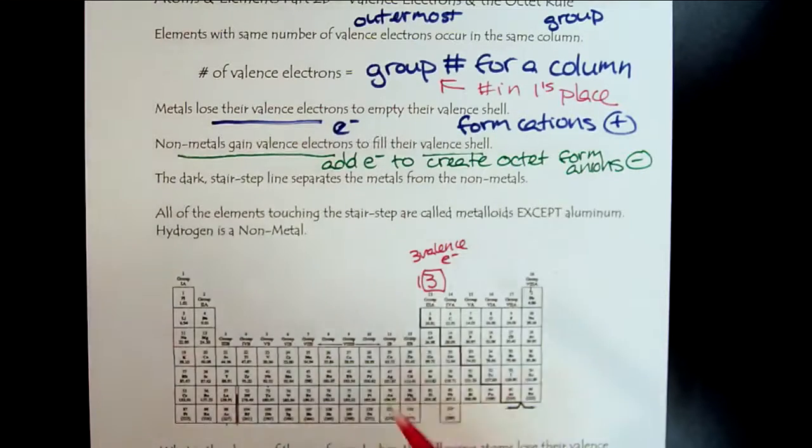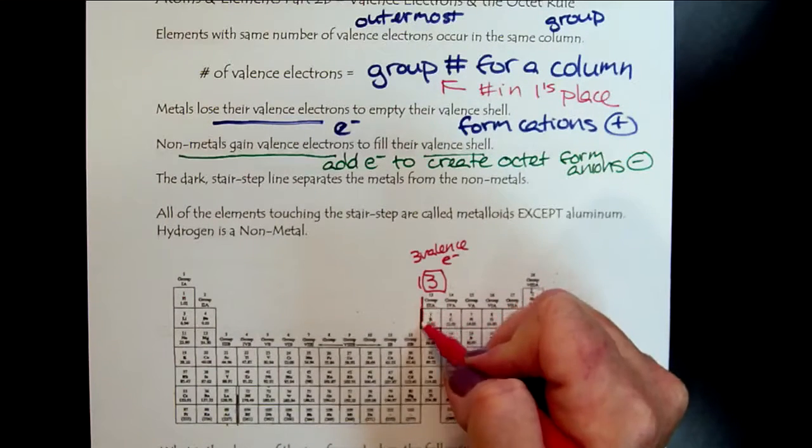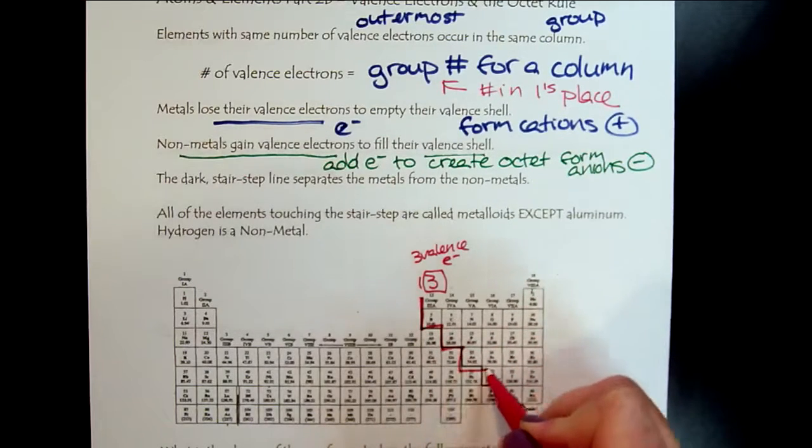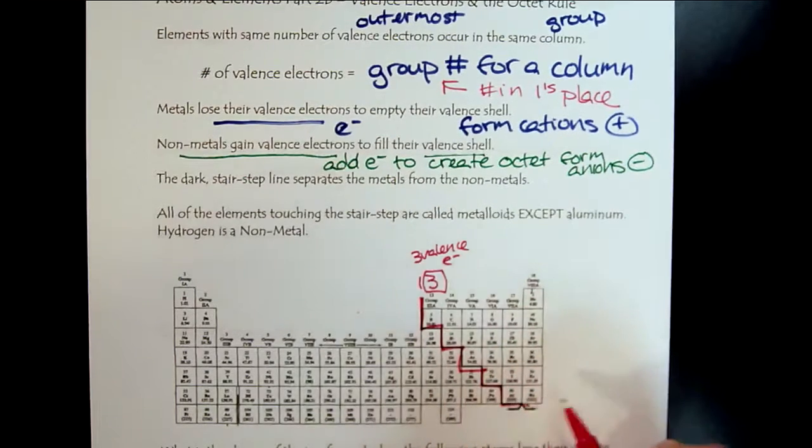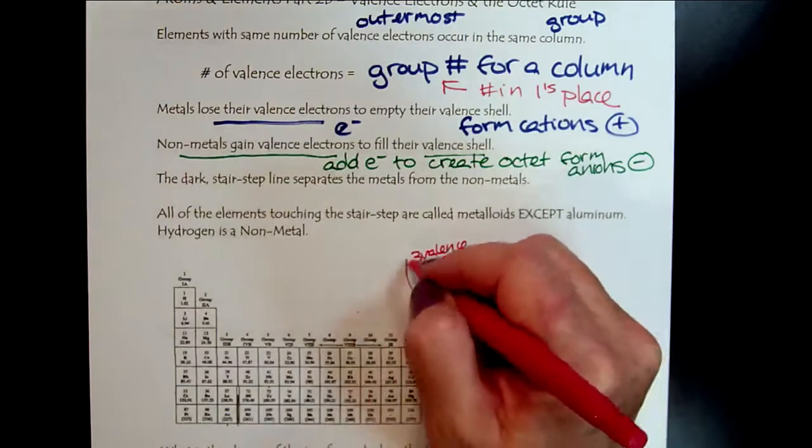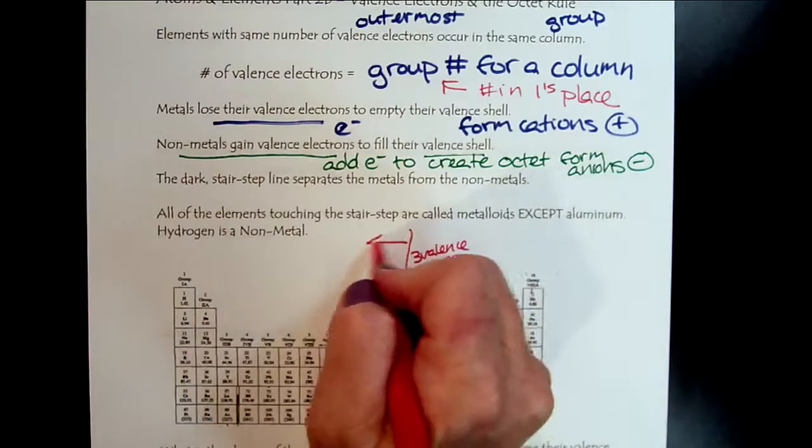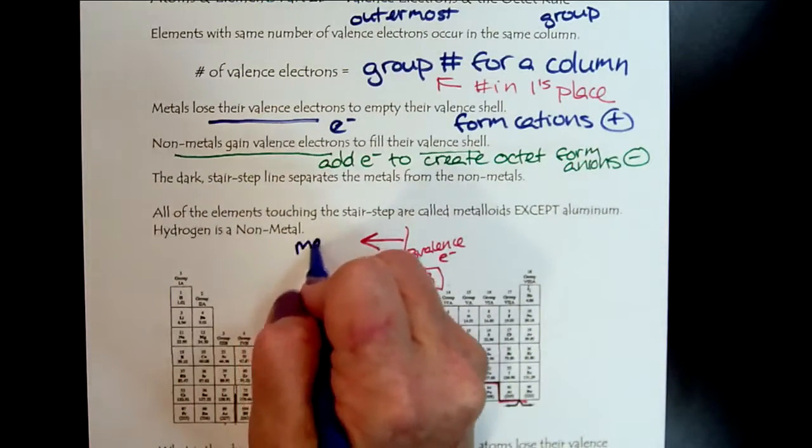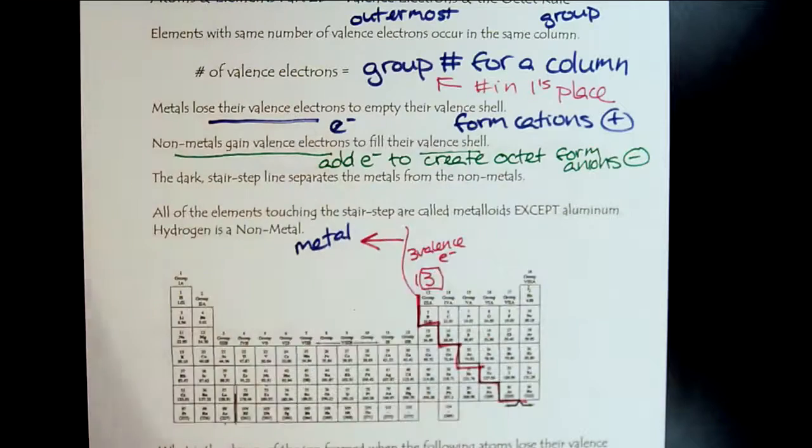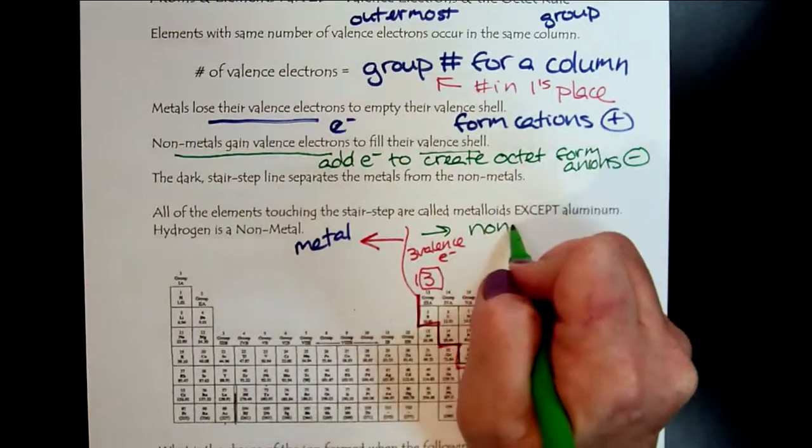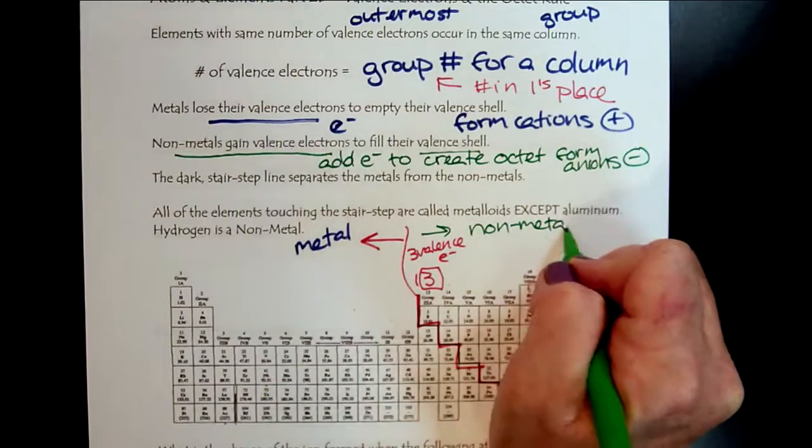If the periodic table doesn't have it, then we just add it with our mind's eye. This stair-step line creates the partition. We'll loop around a little bit here. Everything to the left is a metal, and everything to the right is a nonmetal.